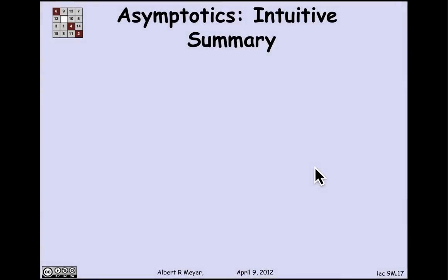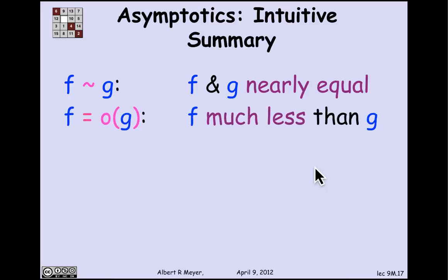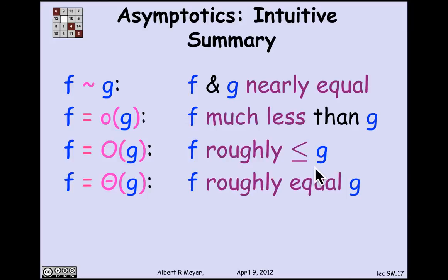To summarize, there are these four relations. f asymptotically equal to g means informally that f and g are nearly equal. f equals little o of g informally means that f is much less than g. f equals O of g means that f is roughly less than or equal to g, where roughly means we're not concerned about constant factors. And f equals theta of g means that f is roughly equal to g. We'll examine these properties in more detail in the next segment.